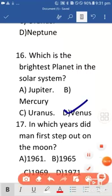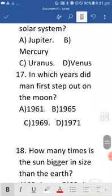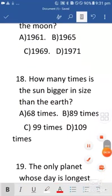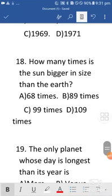Okay, now coming towards the 17th question: in which year did man first step out on the moon? So it is 1969, option C is the right answer. 18 is how many times is the sun bigger in size than the earth? So that is D, that is 109 times.